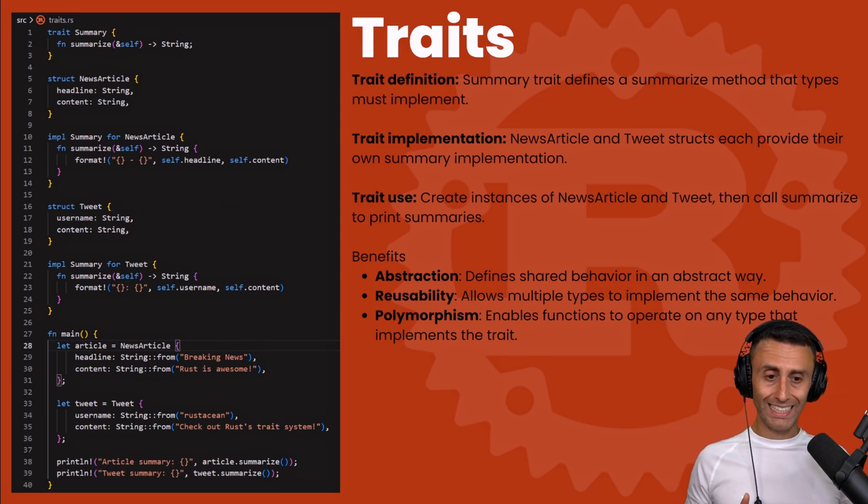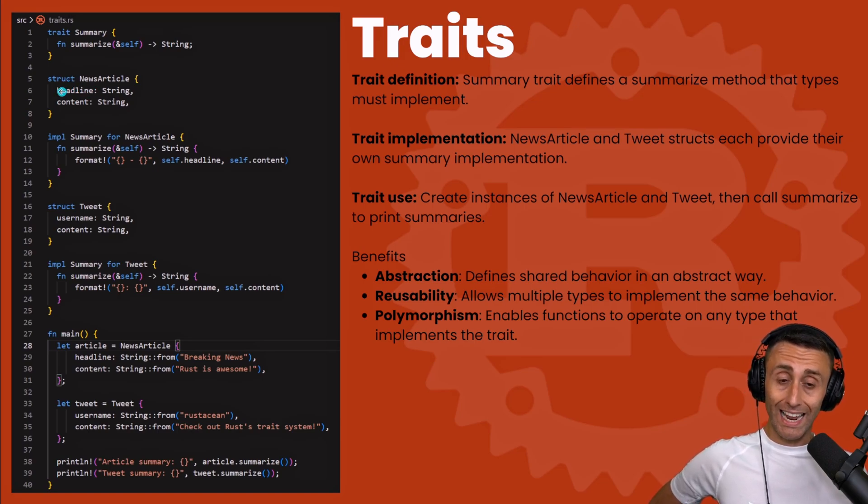So the concept of summarizing is the same, but maybe the struct of a news article and a tweet - they have different values. For example, for news articles we have headline and content. For a tweet we have username and content.